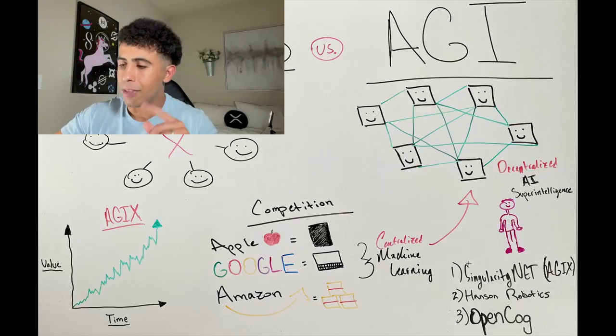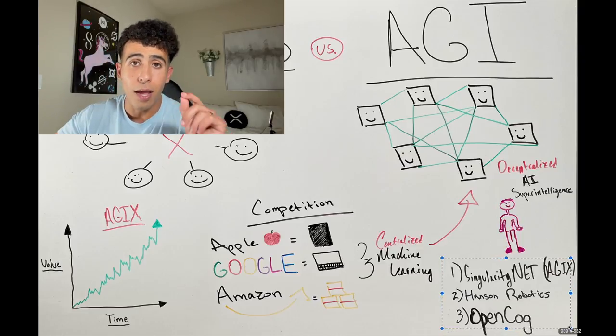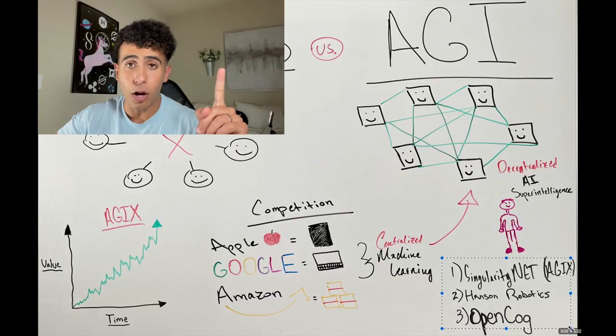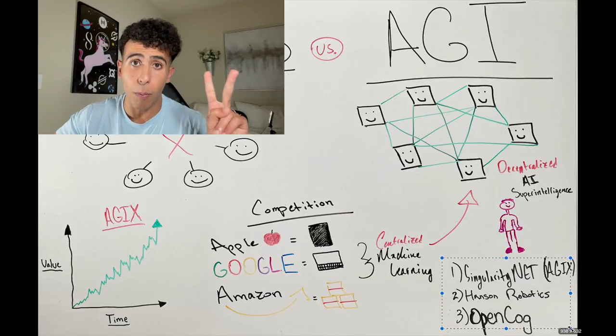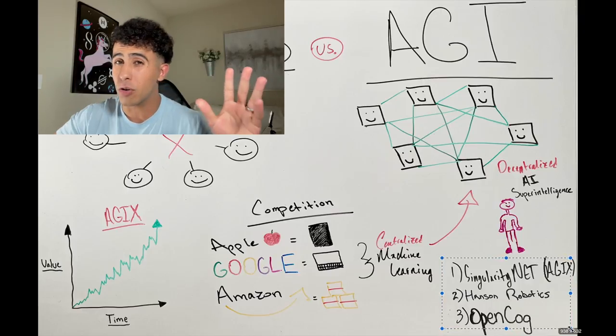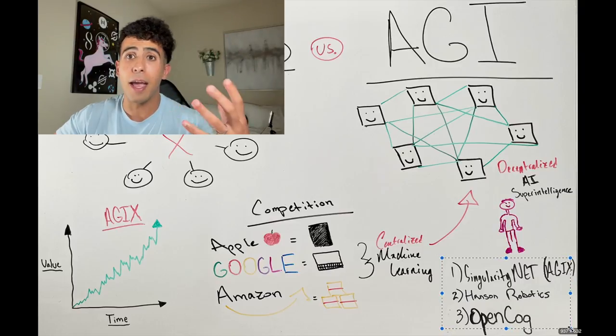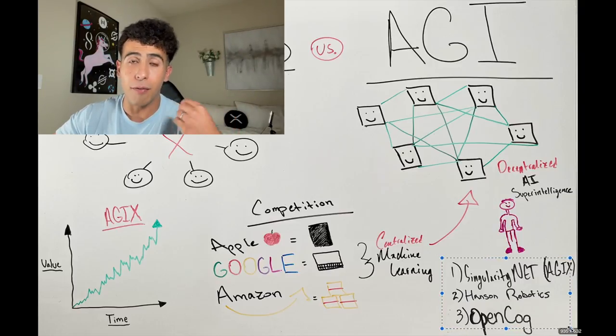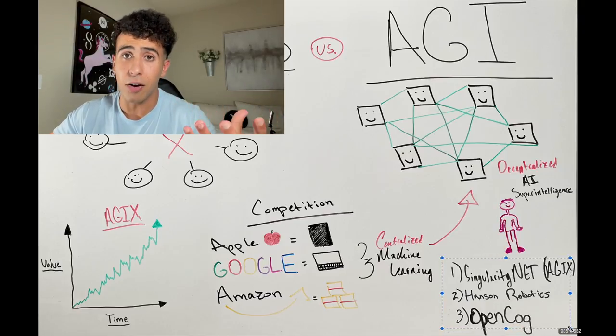SingularityNet, Hanson Robotics, and these three right here are three organizations that you need to know about. The SingularityNet AGI-X Project, that's number one. Number two is Hanson Robotics. You need to know Hanson Robotics. You must. And number three is OpenCog. Just recently, Ben Goertzel and the team have updated the OpenCog algorithm, basically. And they are still working on it. Every couple months, they're updating it. And it is very important. It's basically what runs the SingularityNet.